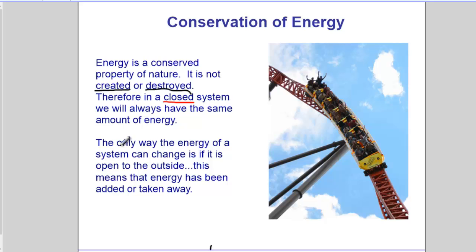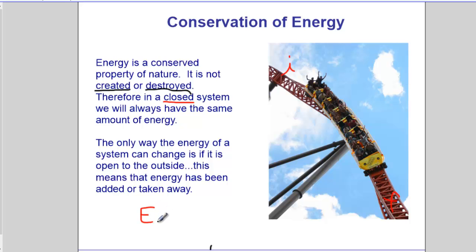Energy can only move in or out of a system if it's added or taken away. Look at these people on a roller coaster enjoying conservation of energy. We start off with some initial condition and end up with the final condition. The total amount of energy we start off with is what we end up with in the end. So we could say energy initial is equal to energy final.